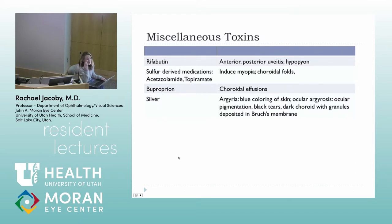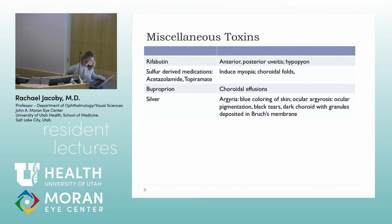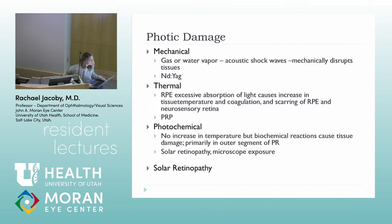Some miscellaneous toxins to keep in mind: silver toxicity can cause black tears and dark choroid with granular choroidal deposits. People have been taking silver as a homeopathic or naturopathic medication, and they can get ocular pigmentation, a bluish skin color, black tears, and a really dark choroid with granule deposits.